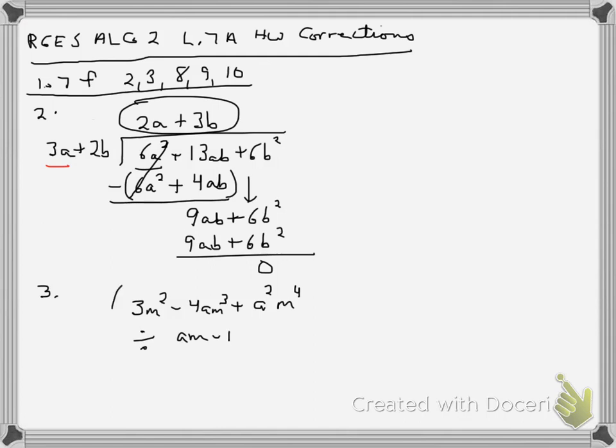Number 3 is tricky because this is the problem, but I need to write this in a better order to be able to do this. Since it begins with the a here, I'm going to rewrite it in descending order of a terms. So I'm going to write this as a squared m to the fourth, and that's my squared term. Then I want my a term minus 4am to the third plus 3m squared, and that's what I will divide by am minus 1.